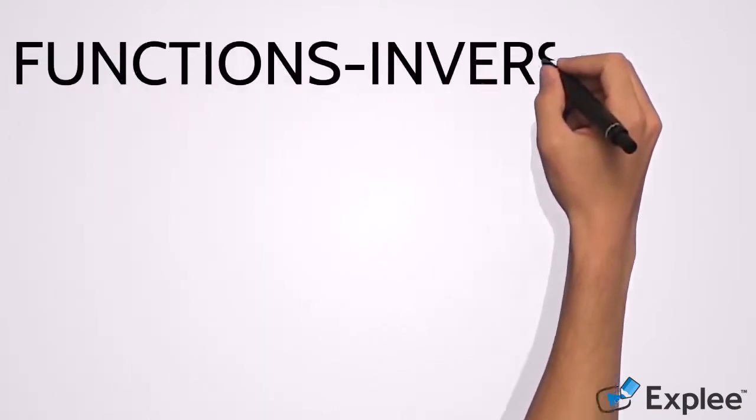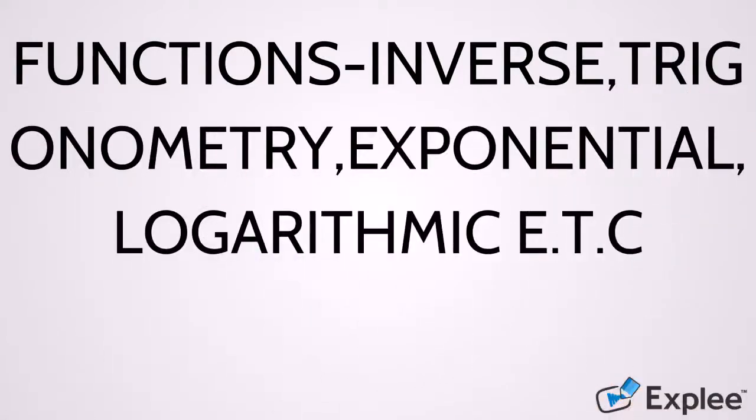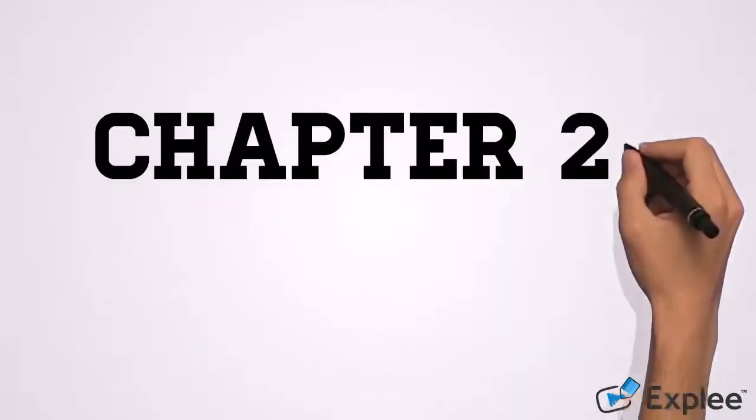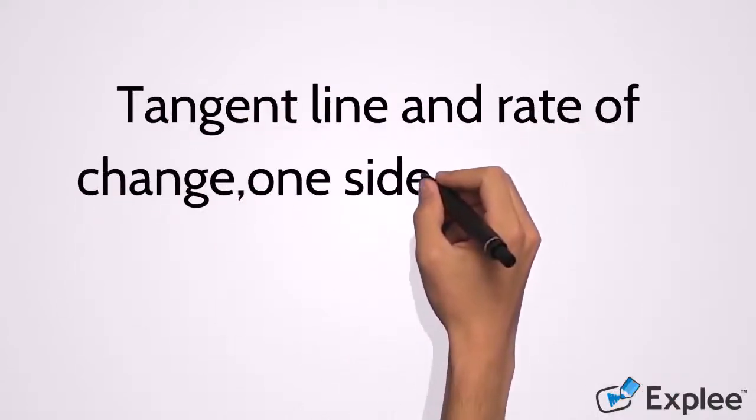In chapter two, we discuss limits. Under this chapter we discuss tangent line and rate of change, one-sided limits, limit properties, how we compute limits, limits at infinity, and lots more.